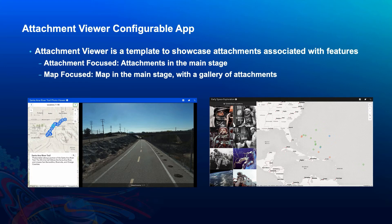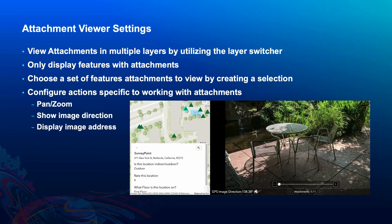The attachment viewer template is a great way to review photos that may have been collected by an emergency response team inspecting damage done by a storm or inventorying checkpoints along a greenway or a trail. The uses for this app can be broad or very narrow depending on what the app author needs. In this template there are two layouts: a map focused layout and an attachment focused layout. Attachment focused layouts stage the attachments in the main panel of the application. A map focused layout stages attachments in a gallery off to the side of the map while the map is presented in the main stage.